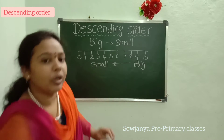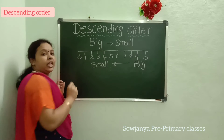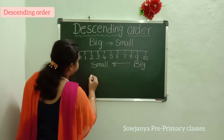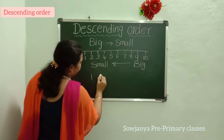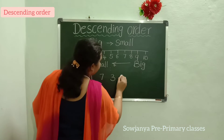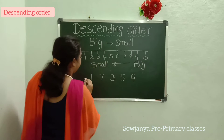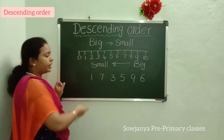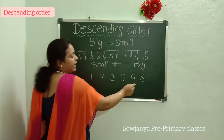We'll solve Problem 1. I'll write numbers here. Today we'll solve the single digit numbers first: 1, 7, 3, 5, 9, 6.